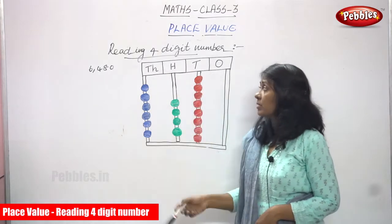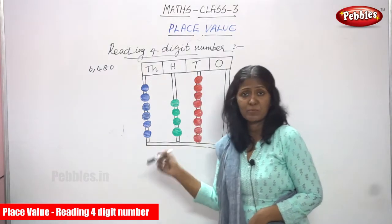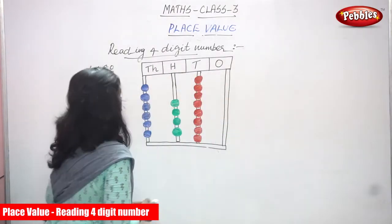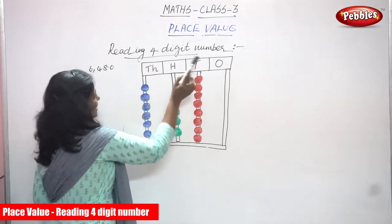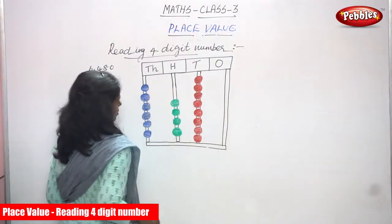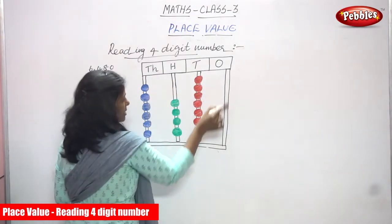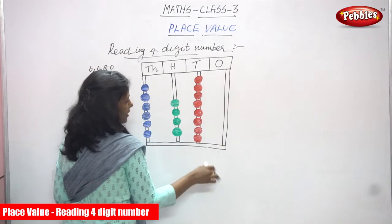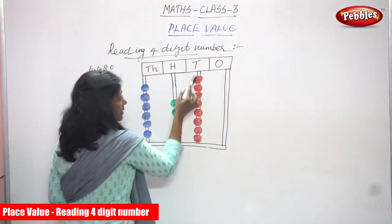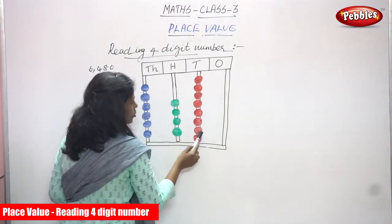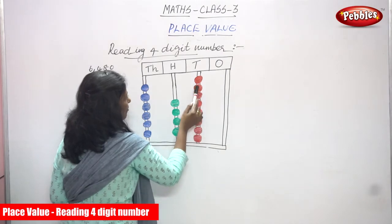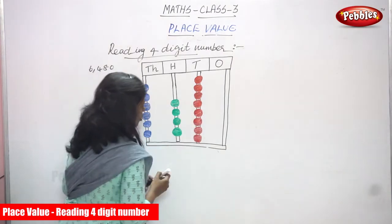We are reading a four-digit number using the abacus method. This is the ones place, this is tens, this is hundreds, and this is thousands. In the ones place there are no beads — just leave it. In the tens place, how many beads are there? One, two, three, four, five, six, seven, eight.